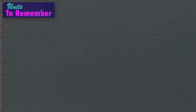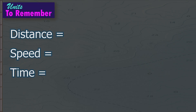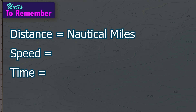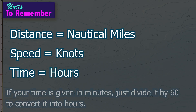Units to remember. Distance is measured in nautical miles. Speed is measured in knots. And time is measured in hours. If your time is given in minutes, just divide it by 60 to convert it into hours.